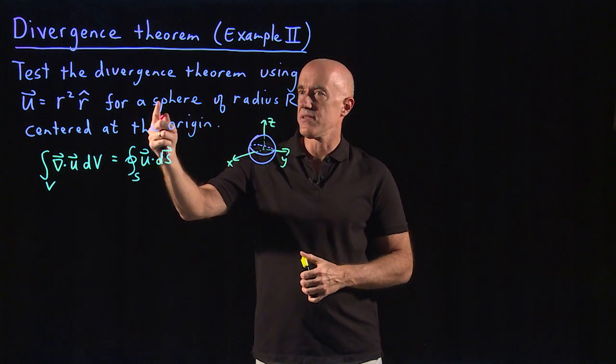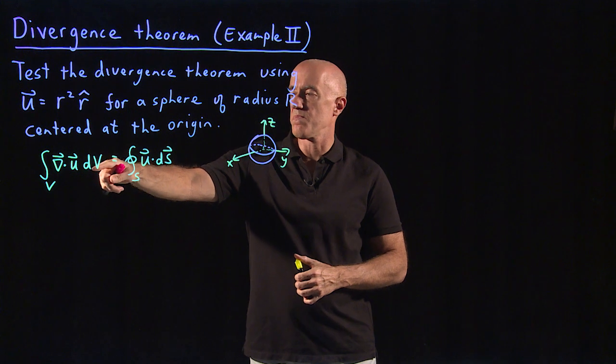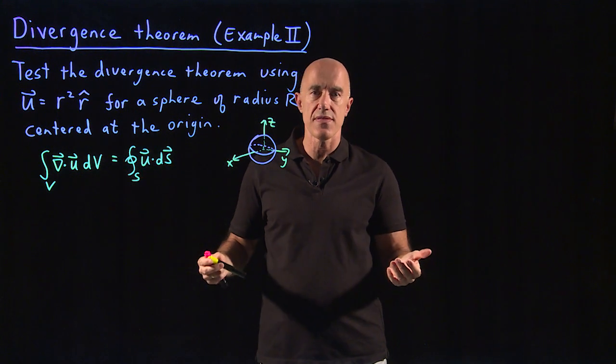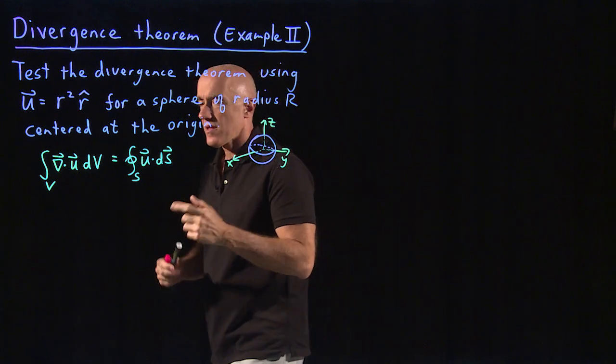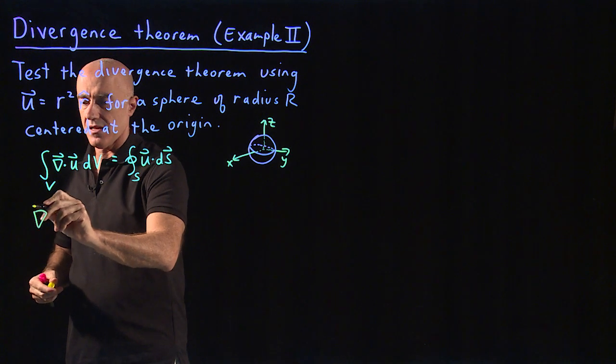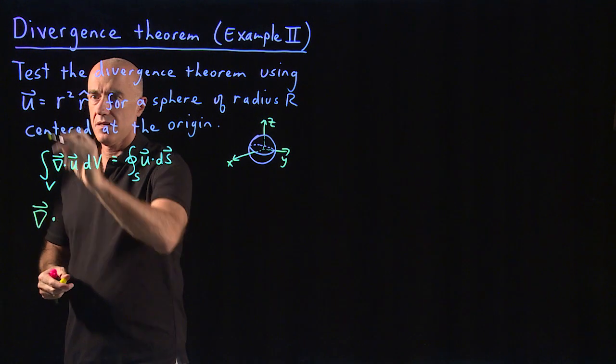We're going to test the divergence theorem, so I want to compute both the left-hand side and the right-hand side and show you that they're the same. So we need the divergence of this vector field, del dot u.